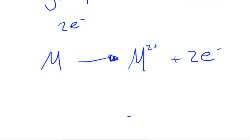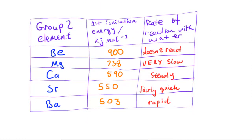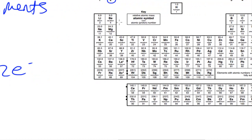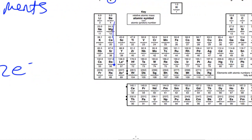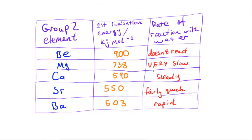Now if we take a look at what happens when these elements react with water, I have a table here showing the reactivity of these different elements with water. In the last video I talked about the reactivity trend — reactivity increases down the group. This table goes from beryllium all the way down to barium, corresponding to elements going down the periodic table, and shows the rate of reaction when placed in water.